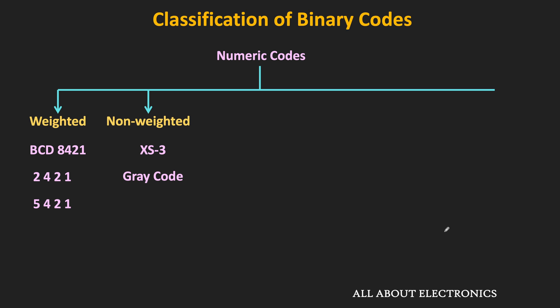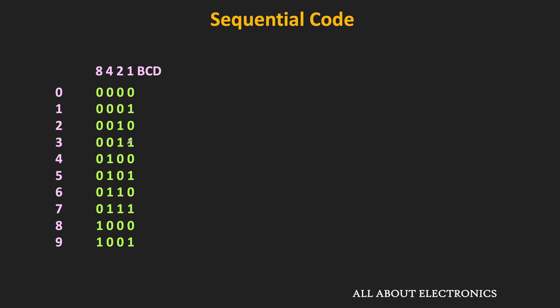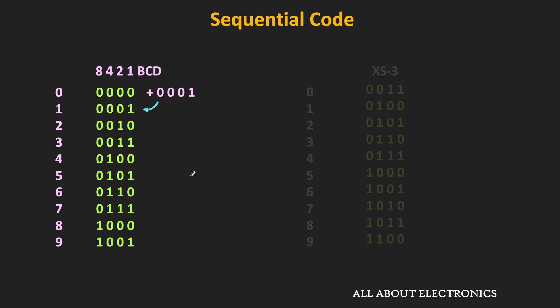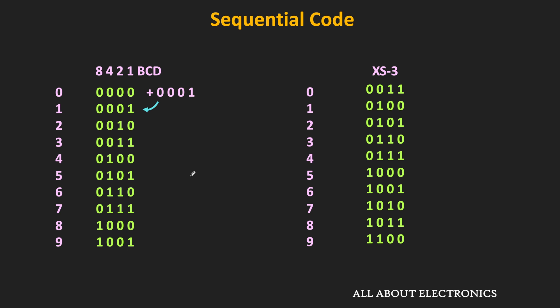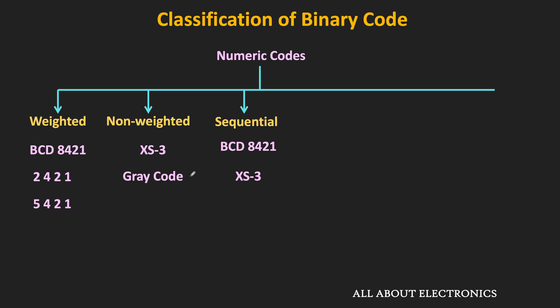There are also binary codes which are sequential codes. In a sequential code, each binary code is one binary number greater than the previous code — meaning if we add 1 to a particular code we get the next code, and the same applies to all codes. The 8421 BCD code is one example of a sequential code. Similarly, the XS3 code is also sequential: if we add binary 3 to a BCD code we get the equivalent XS3 code, and within XS3 adding 1 to any code gives the next code.